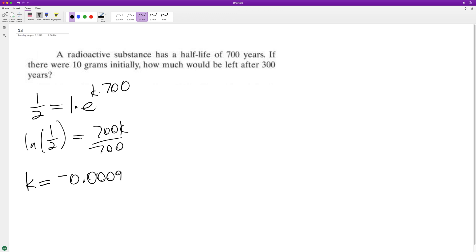Based off of this now we can solve the problem. So our Y = Y sub naught times e raised to the K times our T.